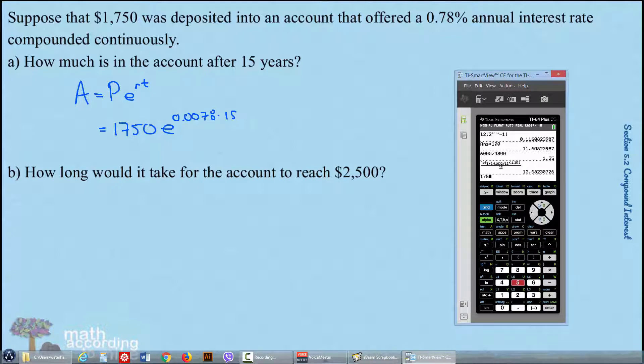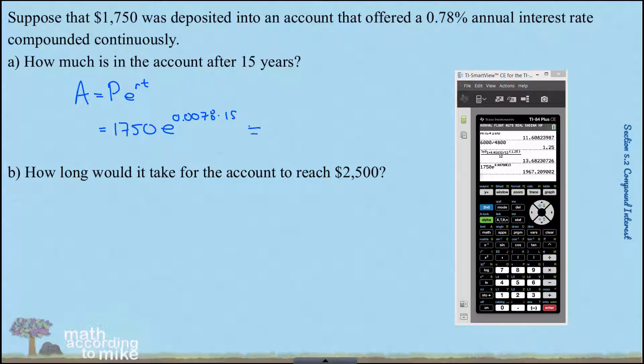Putting this in the calculator. E to the X is above natural log there. We get $1,967.21 if we round to two places. Excellent.